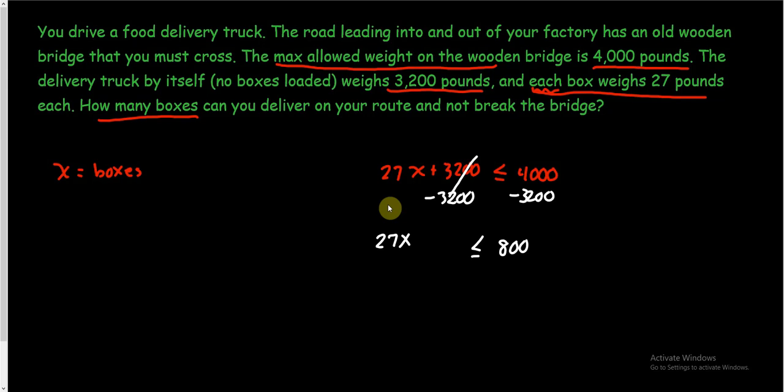The next thing we're going to want to do is get x by itself, still solving. I need to divide both sides by 27. So x has got to be less than or equal to, and if you use a calculator to do 800 divided by 27, what you'll get is 29.633.